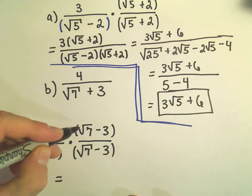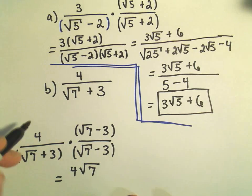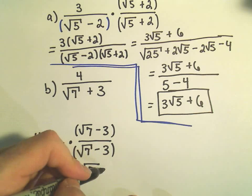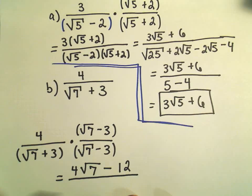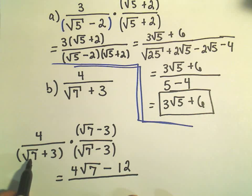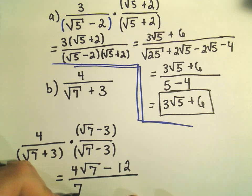So I would distribute 4 root 7 is simply 4 root 7, I'll get positive 4 times negative 3, that'll give me negative 12, and then I'm going to have the square root of 7 times the square root of 7, which is the square root of 49, or equivalently, that'll just be 7.